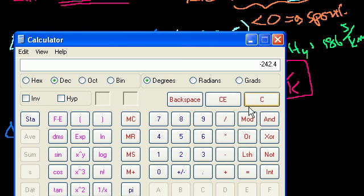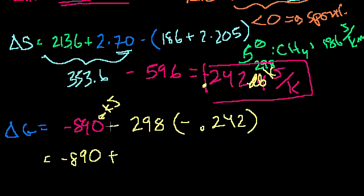But let's see if it can overwhelm the actual enthalpy, the exothermic nature of it. And it seems like it will, because you multiplied a fraction times this, it's going to be a smaller number than that, but let's just figure it out. That's our change in entropy times 298. That's our temperature. Is minus 72.